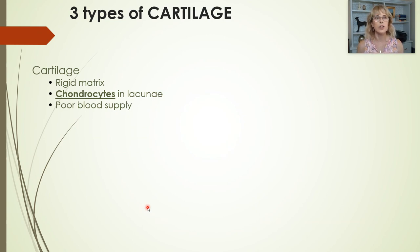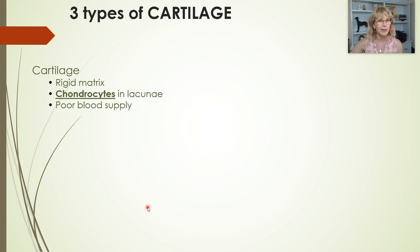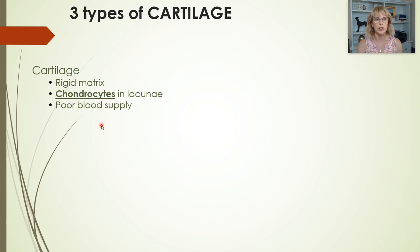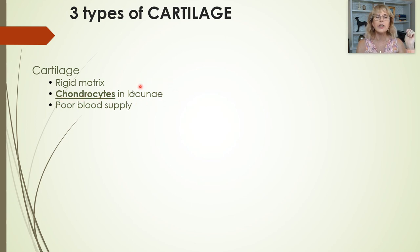Let's talk about cartilage. Cartilage, like bone, has got a rigid matrix — but it is not as hard as bone, because bone has calcium and phosphorus embedded in that matrix, whereas in cartilage there is no calcium or phosphorus. The name of the cells that live in cartilage are chondrocytes, and the little caves they live in inside of the rigid matrix are called lacunae.